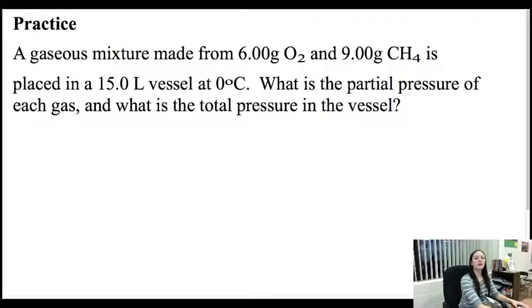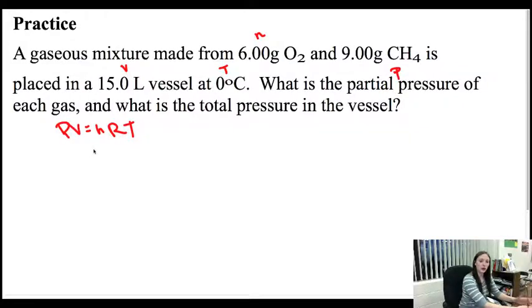Let's look at an example. If I have a gaseous mixture made from 6 grams of O2, 9 grams of CH4, and it's placed in a 15 liter vessel at zero degrees Celsius, what is the partial pressure of each gas and what is the total pressure in the vessel? So I have an amount of grams which I can eventually figure out moles, so I have an N. I have a V because I have a volume and I have a T as a temperature. And I need to know a partial pressure. So I'm looking at PV equals NRT.